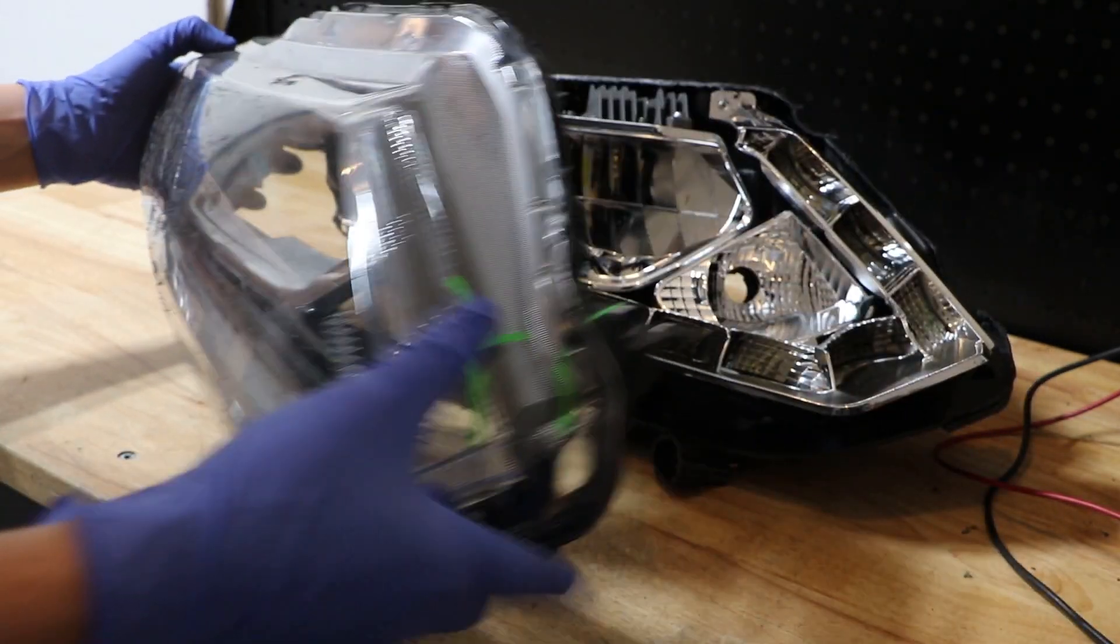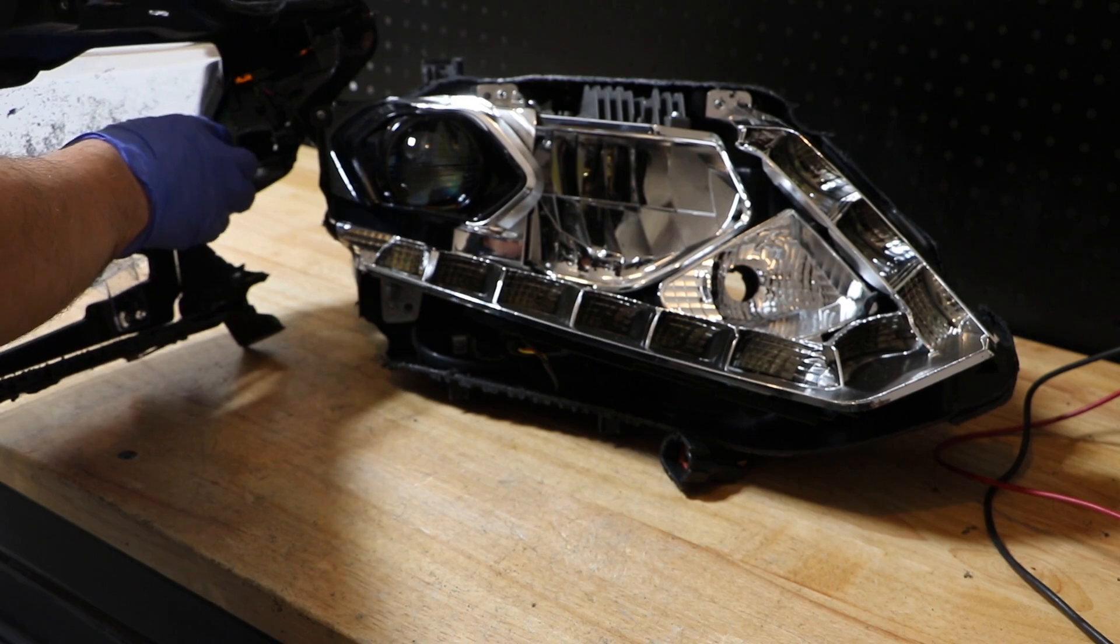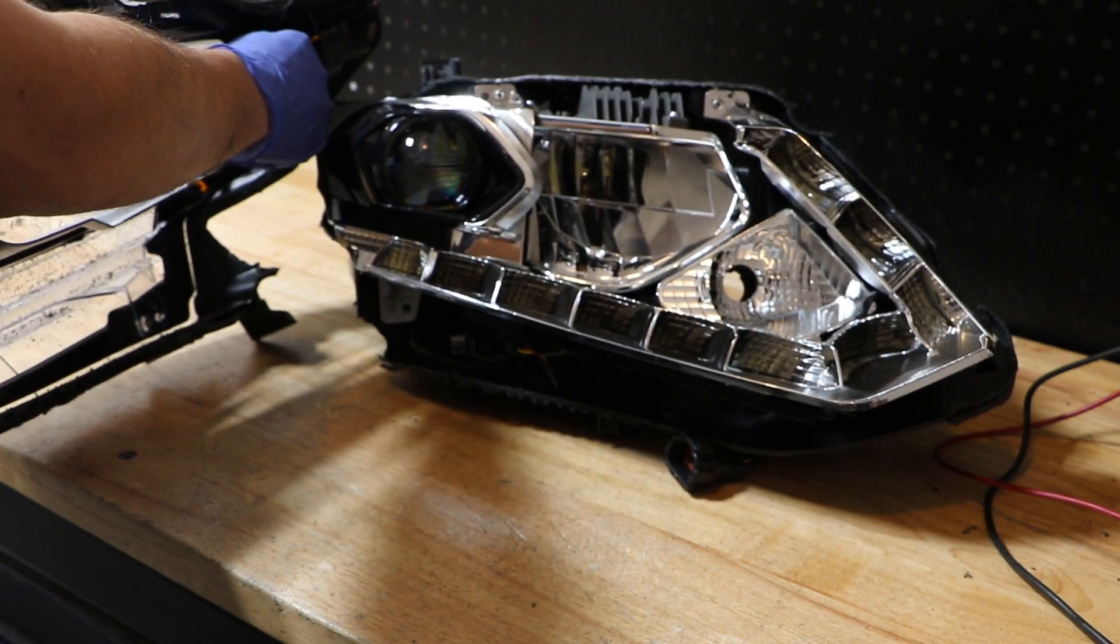I've got the lens removed here. Before we can fully remove the side light, we need to detach the wiring clip.